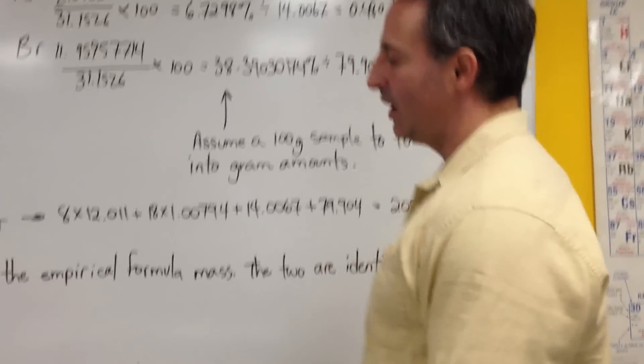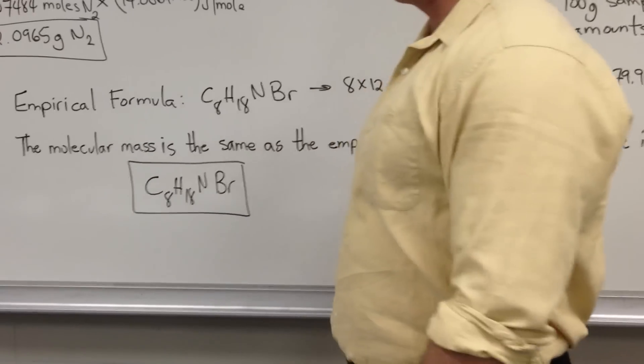So conine hydrobromide has the formula C8H18NBr. Thank you.